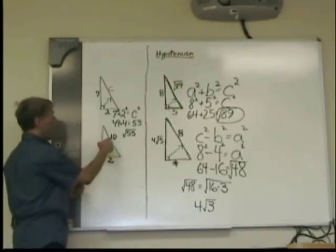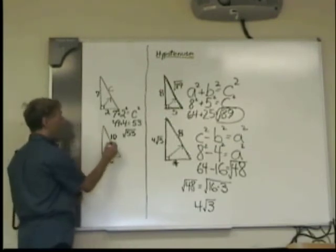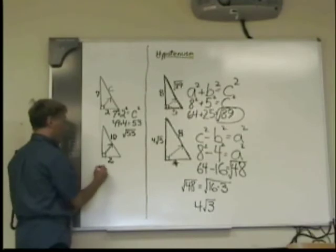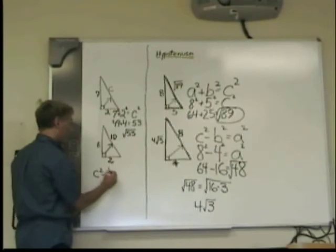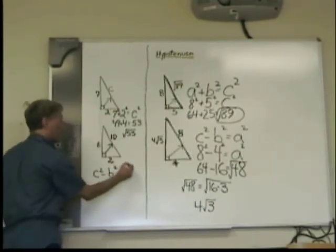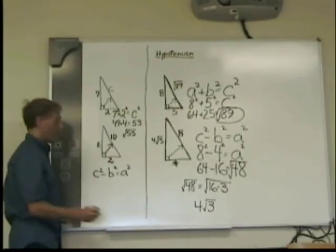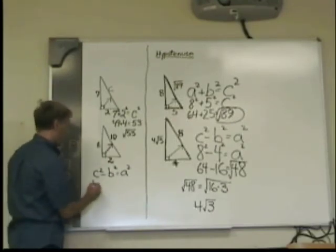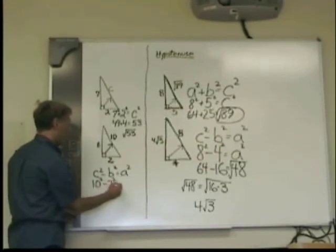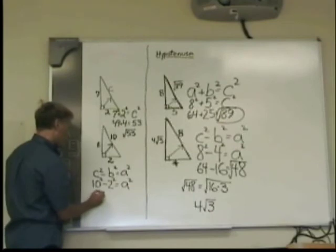Here I have the 10 and 2. I have the hypotenuse, so this is going to be subtraction. I'm missing one of the sides. So C squared minus B squared equals A squared.